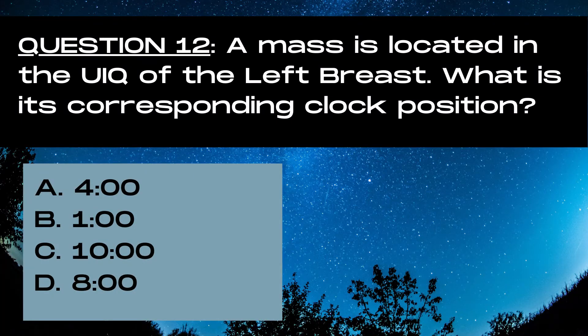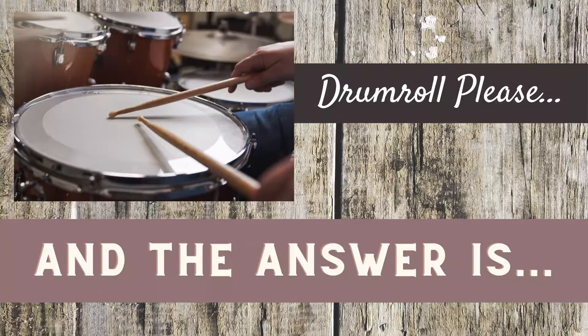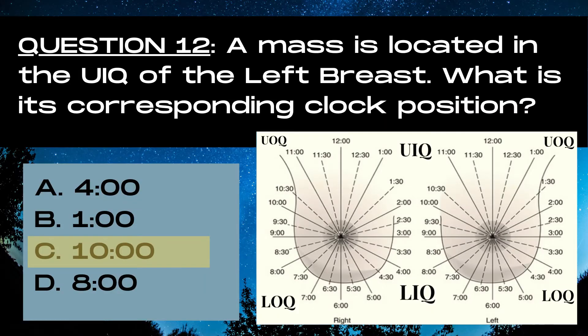Question 12. A mass is located in the upper inner quadrant of the left breast. What is its corresponding clock position? A 4 o'clock, B 1 o'clock, C 10 o'clock, or D 8 o'clock? The answer is C, 10 o'clock. In the left breast, the upper inner quadrant has clock positions ranging from 9 o'clock to 12 o'clock, with 10 o'clock being sandwiched right in that segment of the breast.